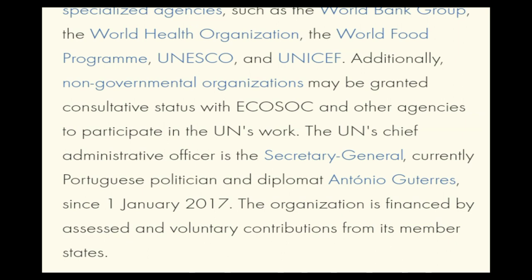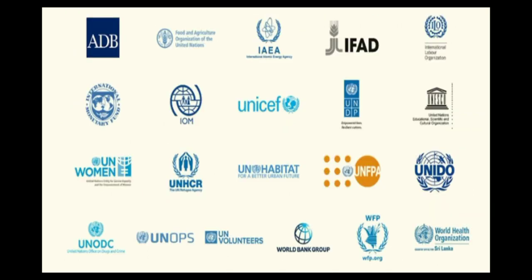The UN has six principal organs: the General Assembly, the Security Council, the Economic and Social Council, the Trusteeship Council, the International Court of Justice, and the UN Secretariat. The UN system also includes a multitude of specialized agencies such as the World Bank Group, the WHO, the World Food Programme, UNESCO, and UNICEF, as well as non-governmental organizations.